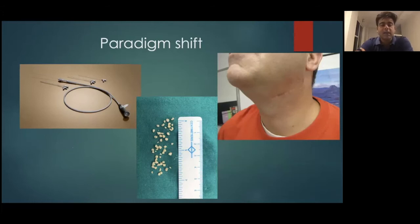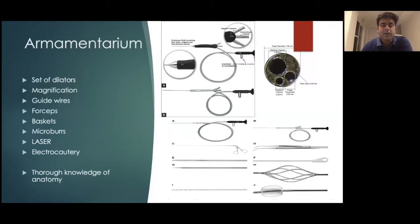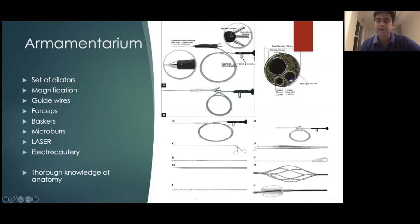The evolution of the endoscope has brought upon a paradigm shift, moving away from gland excisions towards removal of ductal obstruction such as stones. Regarding the sialendoscopist's armamentarium, the minimum set of instruments includes a set of dilators — paramount to get inside the duct under magnification — guide wires, forceps, baskets, and the sialendoscope itself with its operating channel. And of course, thorough knowledge of anatomy and having done a number of open cases is essential before getting into this field.